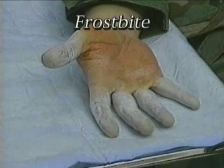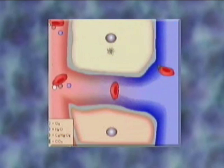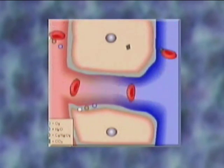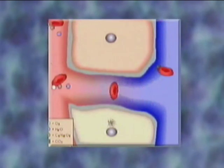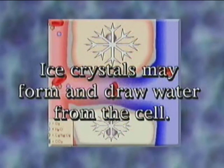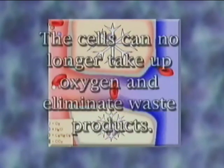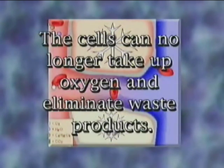Frostbite is the freezing of tissues, which may include the skin, muscles, tendons, and bone. When the cells in tissue freeze, all cellular activity ceases. Ice crystals may form and draw water from the cell. Ice crystals can cause physical damage to the cells. Also, the cells can no longer take up oxygen and eliminate waste products.